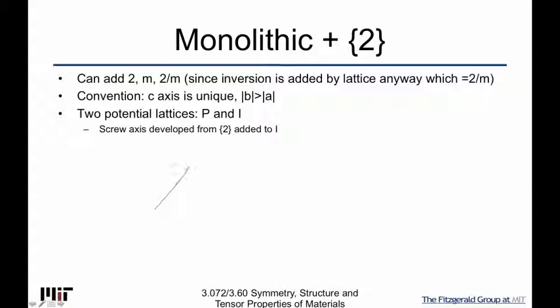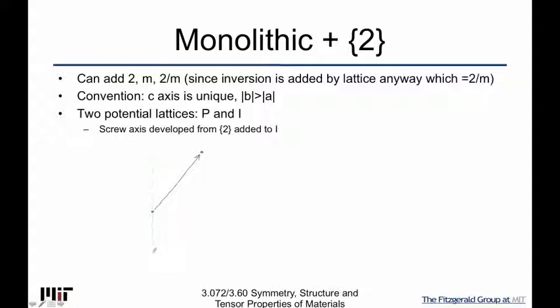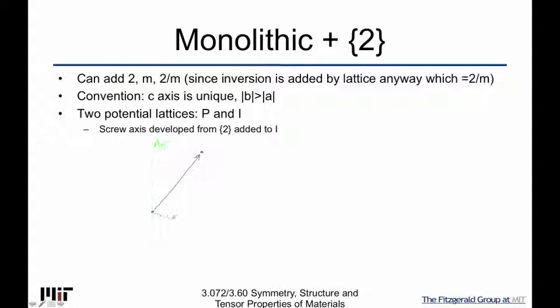Let's have our vector coming out at us, going to another lattice point, and have our rotation axis right there. We'll draw a little projection. I've already mentioned that this was T perpendicular = ½A + ½B. So that's just a redrawing. Now let's put in our motifs.